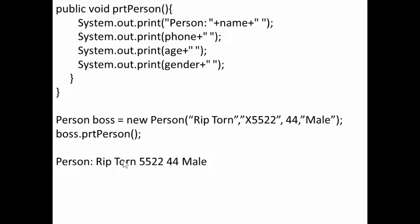So for example, I can define a new person called boss, and his name is Rip Torn. His telephone number is extension 5522. His age is 44, and he is a male. Now if I invoke boss dot printPerson, I get the line below: Person Rip Torn 5522 44 Male.